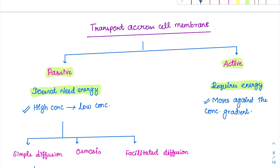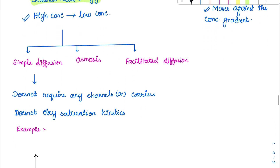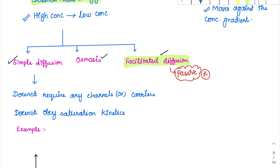The further divisions of passive transport include simple diffusion, osmosis, and facilitated diffusion. Students must remember that facilitated diffusion is a form of passive transport — the name looks very active, but it is passive. Please don't forget that.